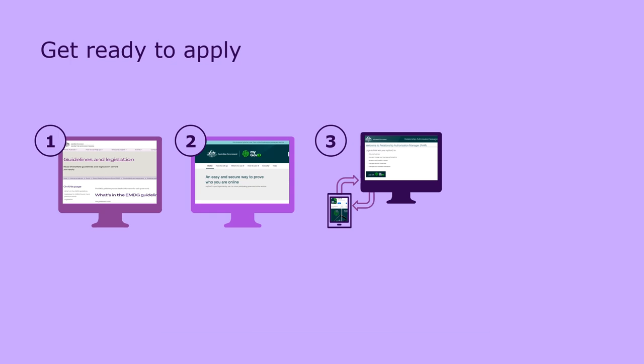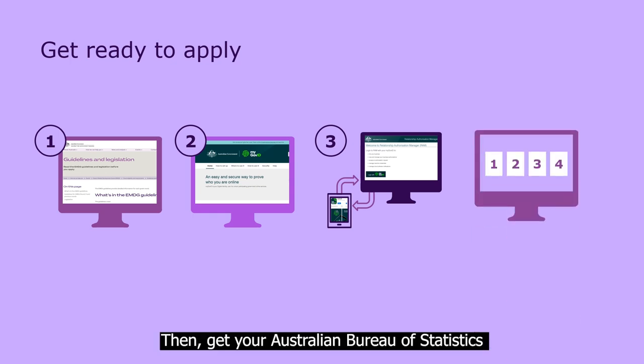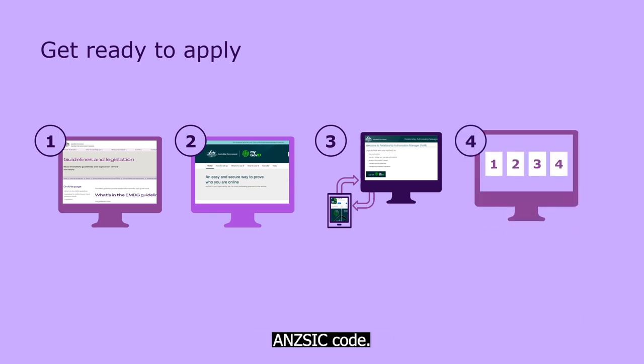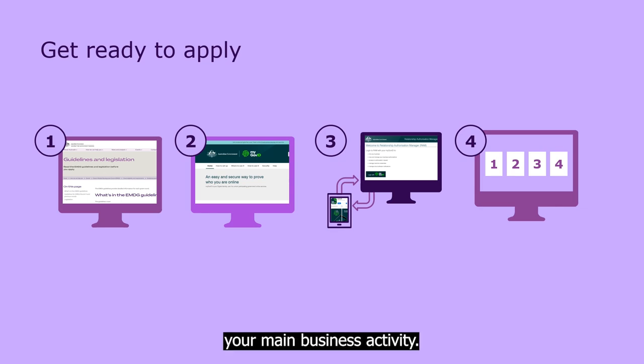Then, get your Australian Bureau of Statistics ANZSIC code. It's the four-digit industry class that best describes your main business activity.